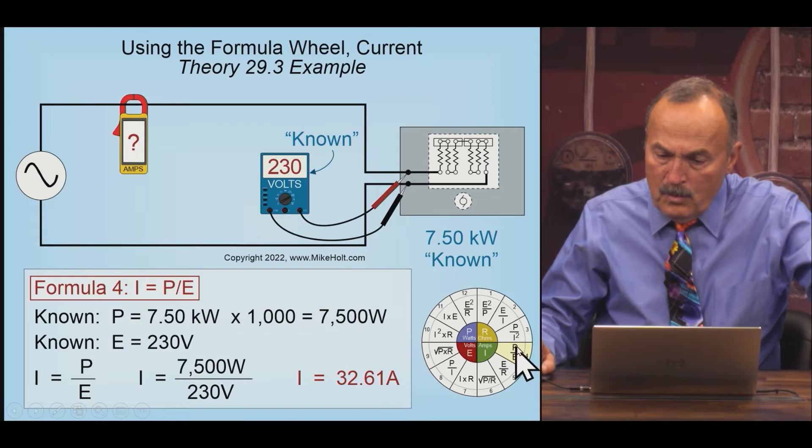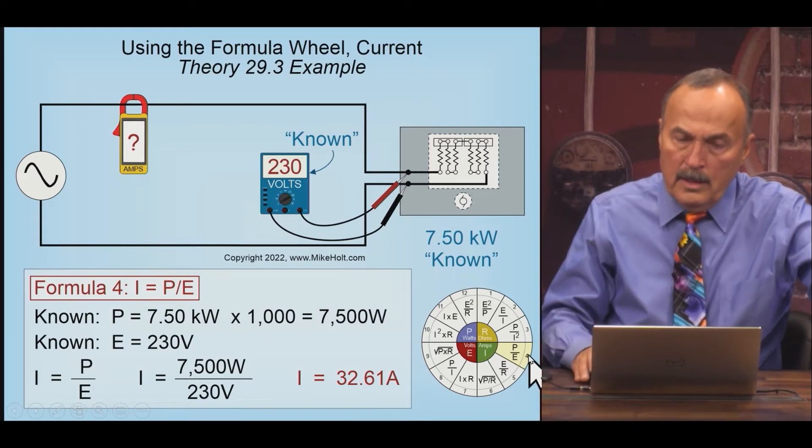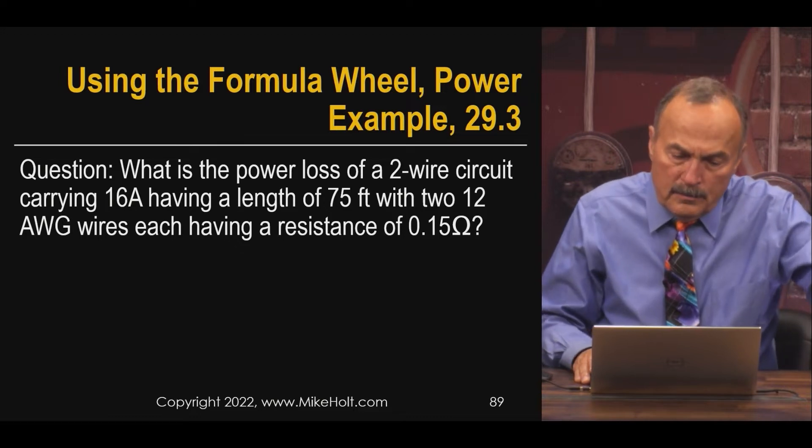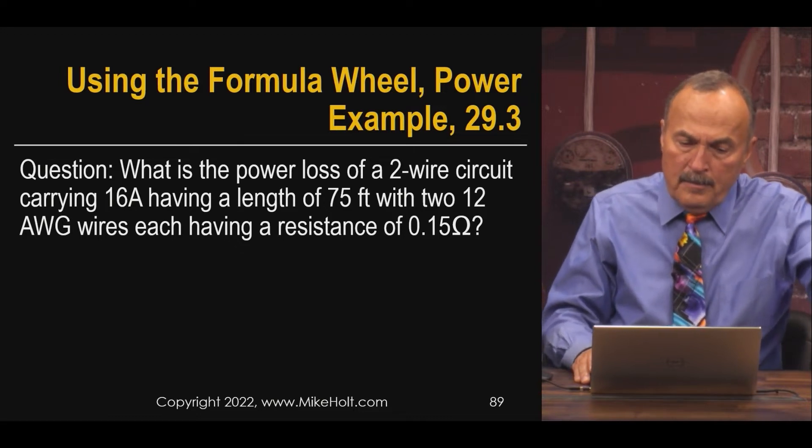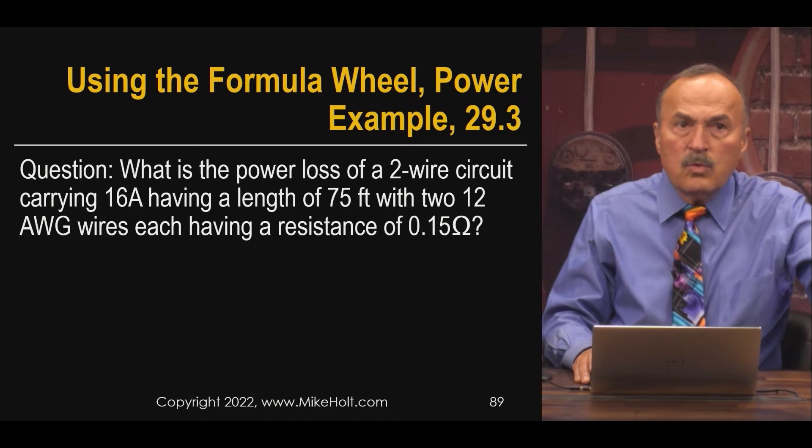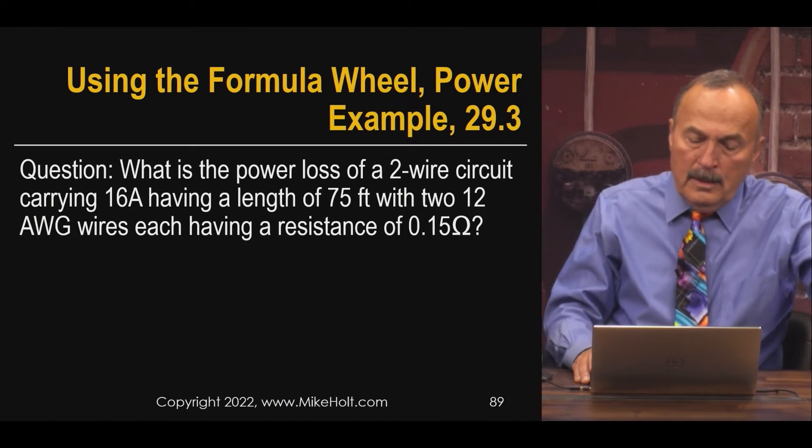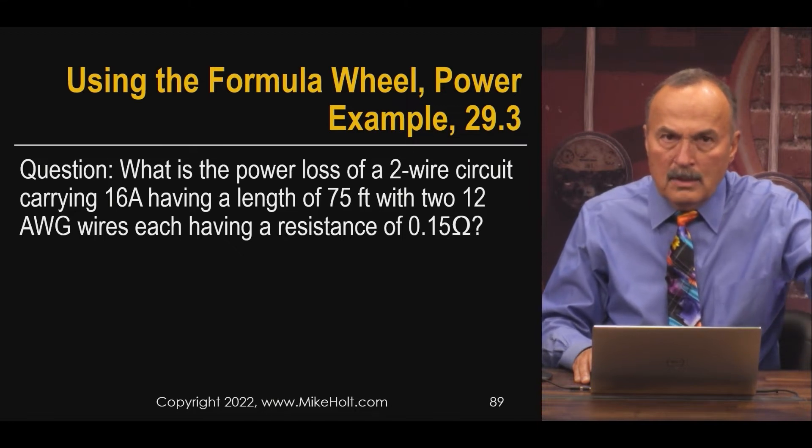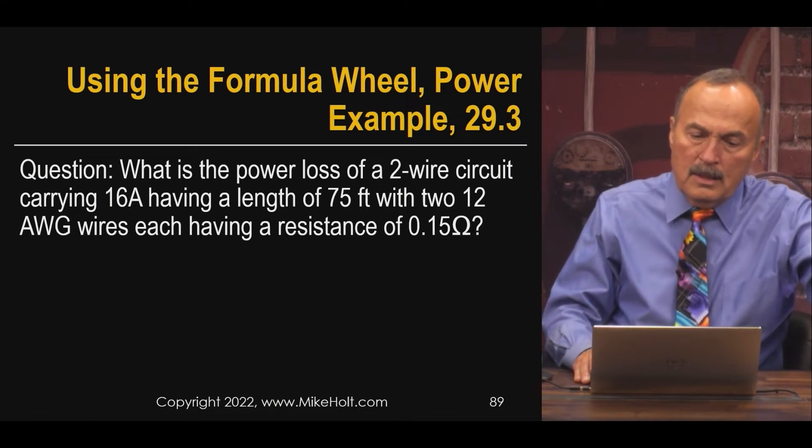What about if you ran two wires and it carries 16 amps, and it's 75 feet of 12 gauge wire, and that wire has a resistance of 0.15 ohms each? Just so we're not having you go to Chapter Nine, Table 8, Table 9.